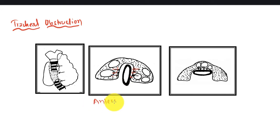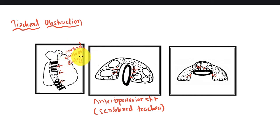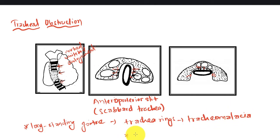If the trachea is compressed from both sides it will cause an anterior-posterior slit, or scabbard trachea. If it is compressed from the anterior-posterior side it will be compressed laterally. If one lobe is markedly enlarged on one side, the trachea will be pushed to the other side. In long-standing cases, tracheal rings undergo tracheomalacia and the trachea may collapse post-operatively.